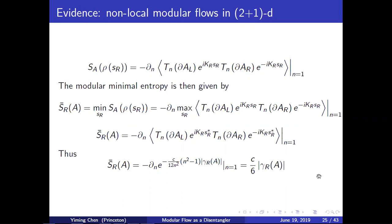So in the case that the modular flow is non-local, we use these arguments to show that the modular minimal entropy is equal to the area of the constrained extremal surface divided by 4G Newton.